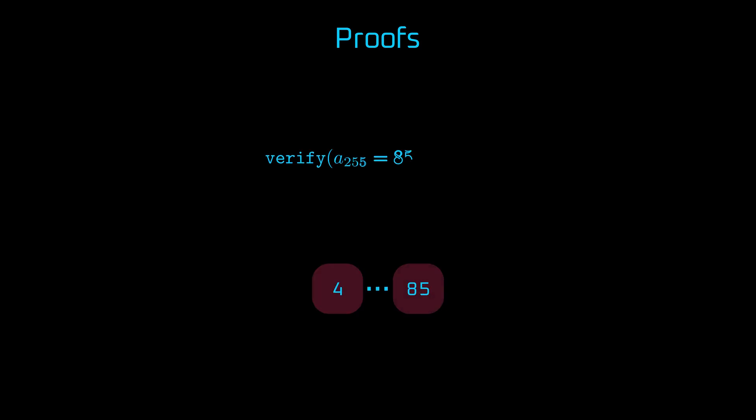Now the question is, what about the proofs? As we saw in a simple example, to verify that 85 belong to the tree with a root commitment C00, we will need to generate the proof PI0.